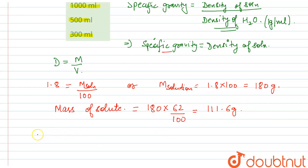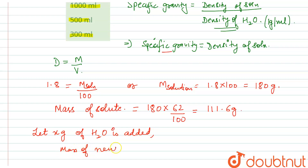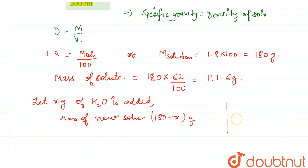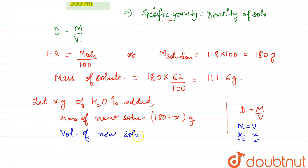Now, let x grams of water be added. The mass of the new solution will be 180 + x grams. Since the density of water is 1, mass equals volume, so adding x grams of water also adds x ml of volume. Therefore, the volume of the new solution will be 100 + x ml.